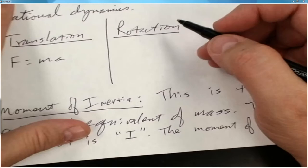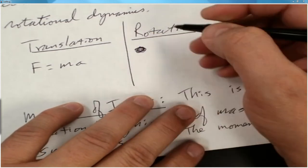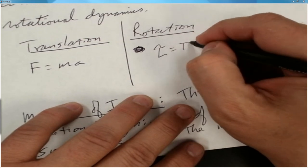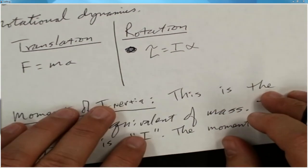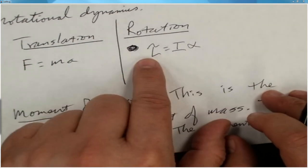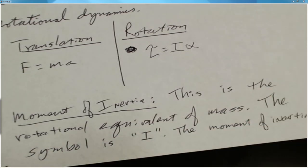Going back to rotational motion: for rotation, torque equals the moment of inertia multiplied by the angular acceleration. F = ma for translation; torque = I·α for rotation. It's time to practice. I suggest you read this section.